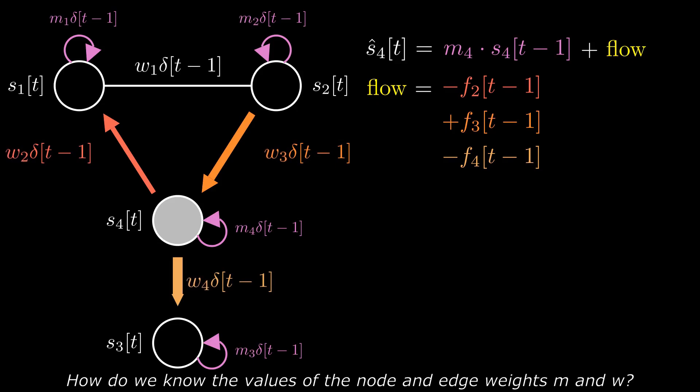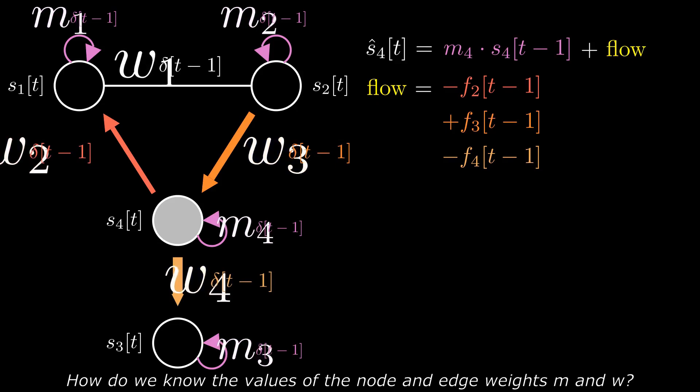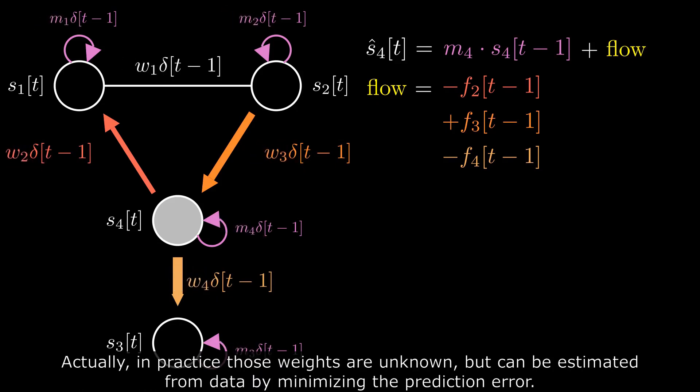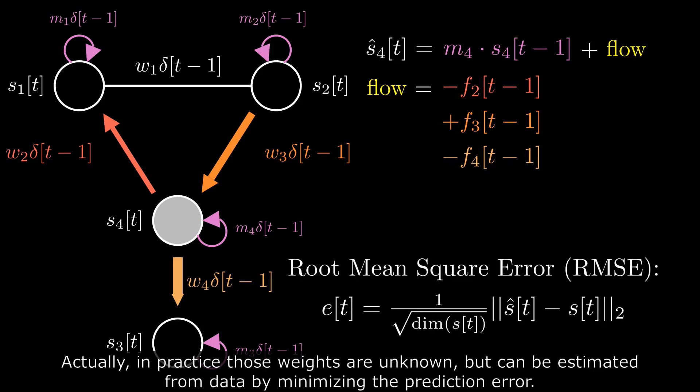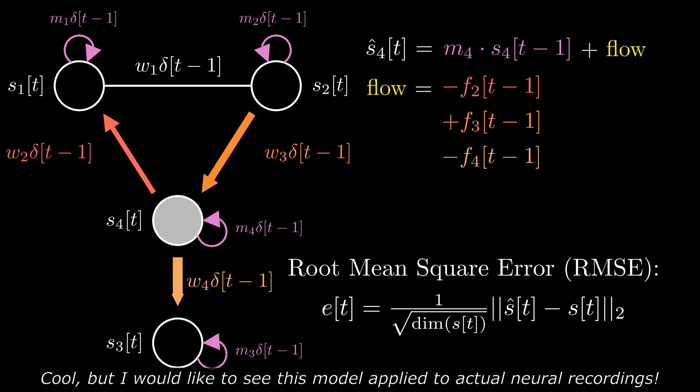How do we know the values of the node and edge weights M and W? Actually, in practice those weights are unknown, but they can be estimated through data by minimizing the prediction error.